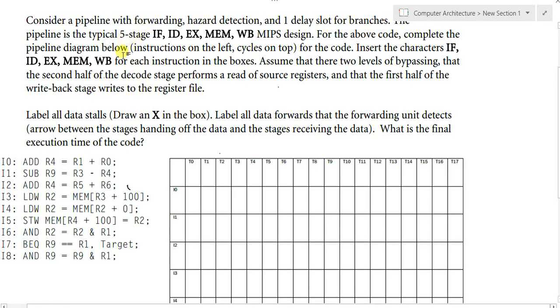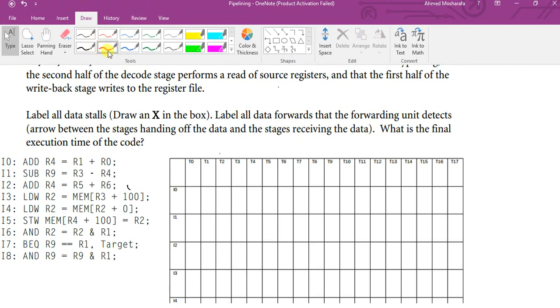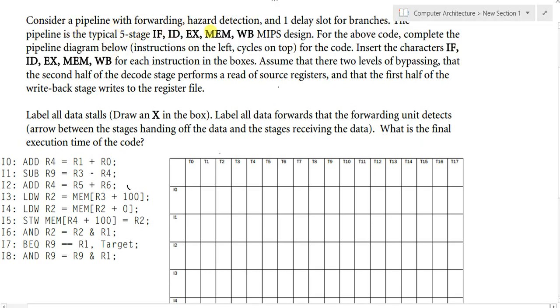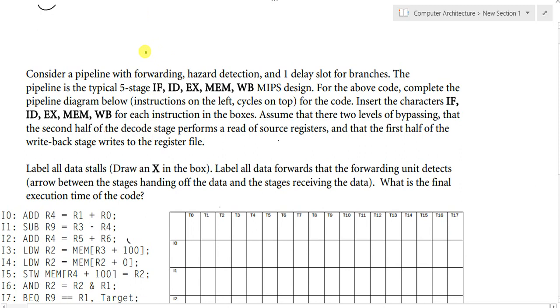Welcome to this part of the computer architecture tutorial. Today we will demonstrate the pipeline, the instructions and how they are inserted into the pipeline. So let's look at the question. Consider a pipeline with forwarding, hazard detection, and one delay slot for branches. So that says a lot about the properties of the pipeline. It has forwarding, meaning that it can bypass the value of the calculated stuff from one stage to another. It has hazard detection, meaning that it detects the structural hazard, the data hazards and the control hazards.